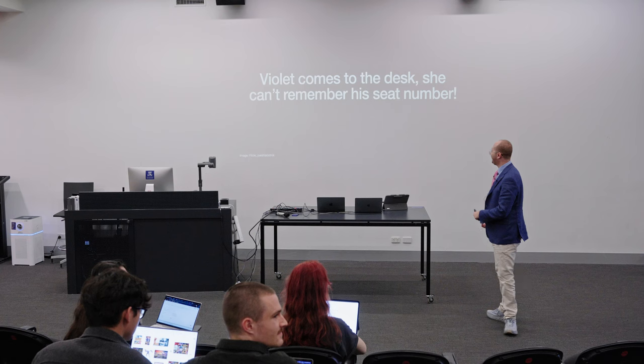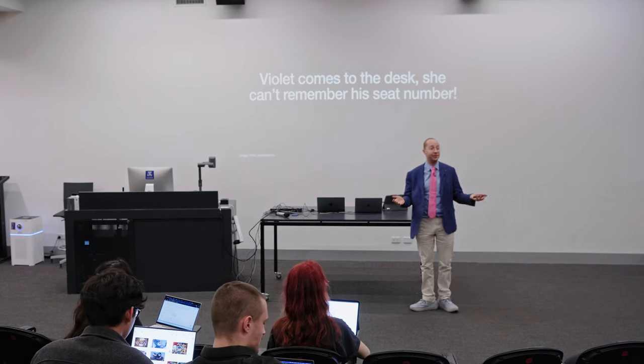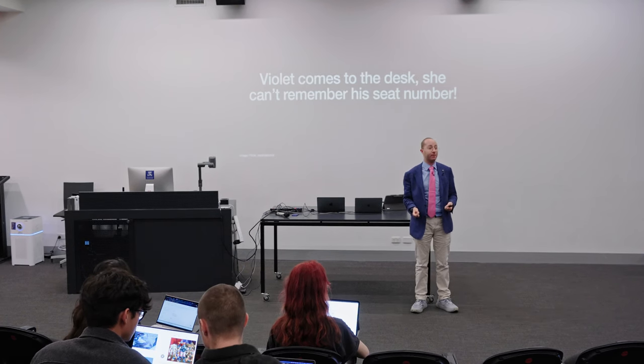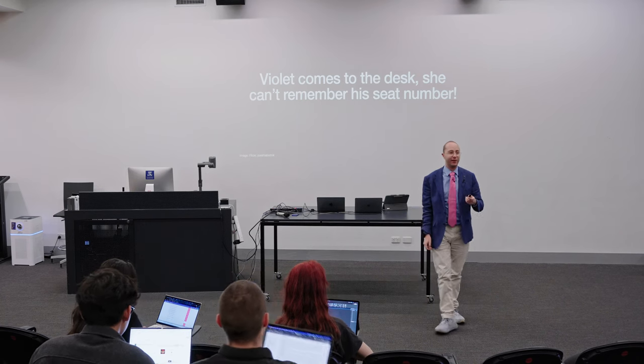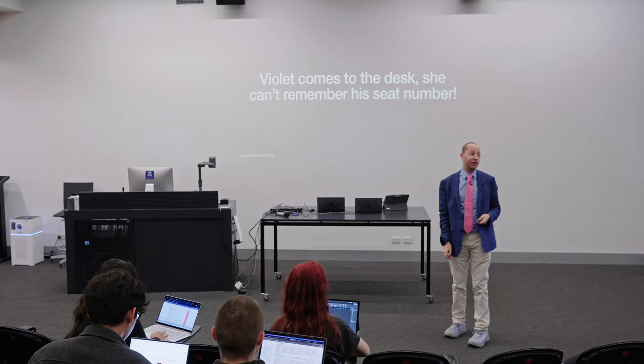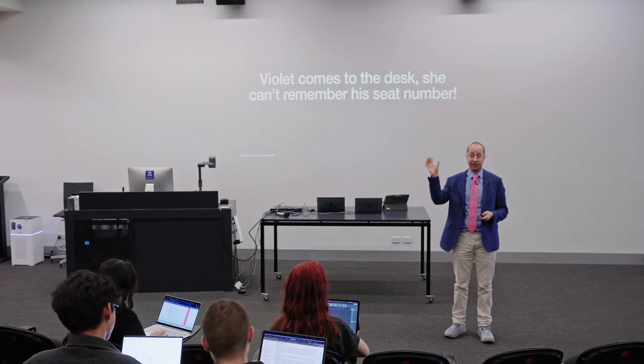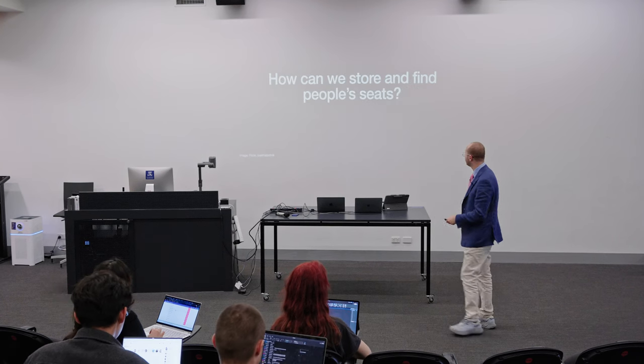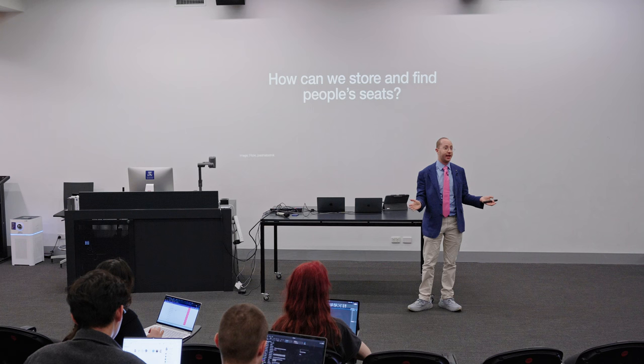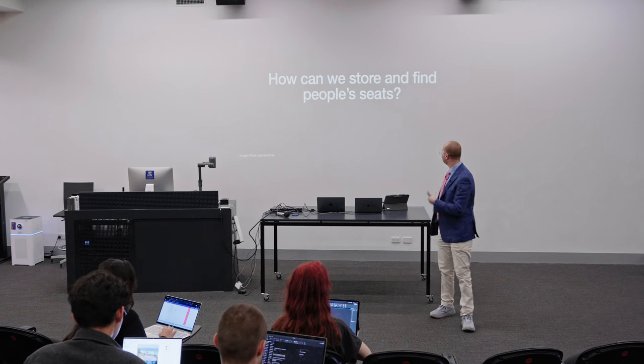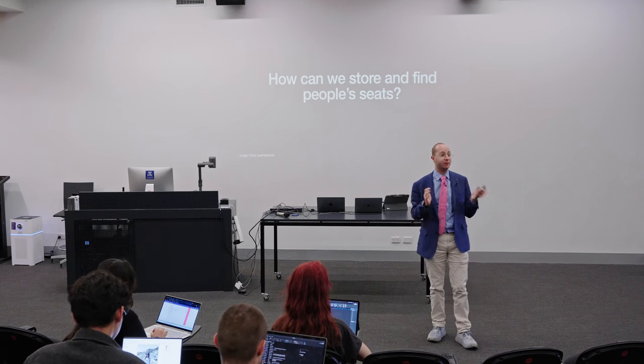Yesterday we left off talking about Violet, who comes to the desk looking for what seat number she's been allocated to in the Taylor Swift concert after winning the class competition, but she can't remember where it is because all she's got is her QR code ticket. So we had a data structure to help Ticketmaster store and find everyone's different tickets so that when someone comes with their name, they can look it up quickly and efficiently in the database. This was our hash table.